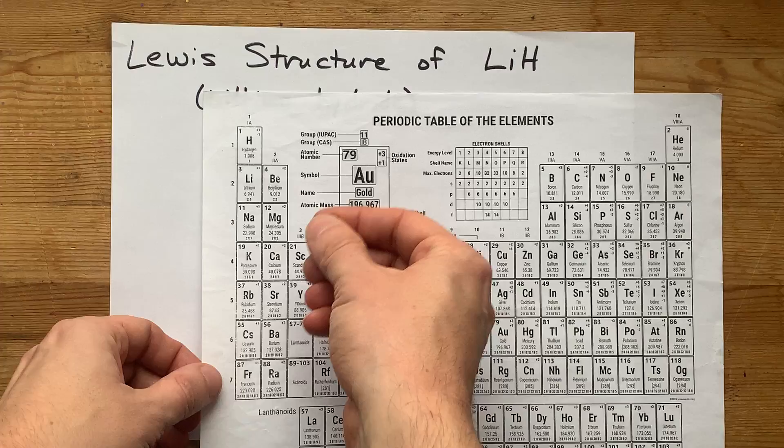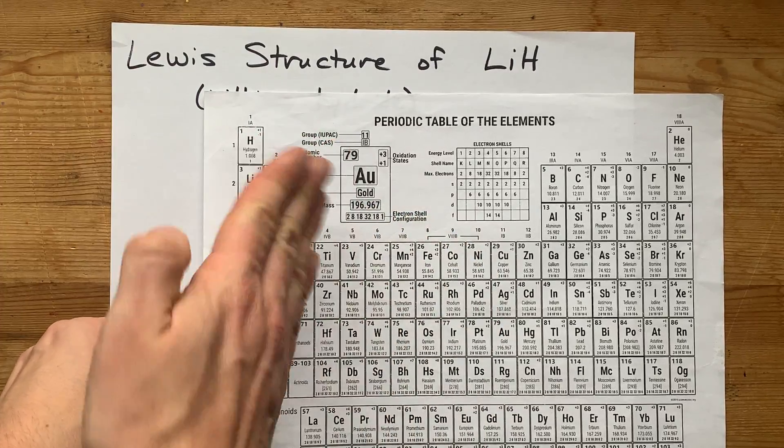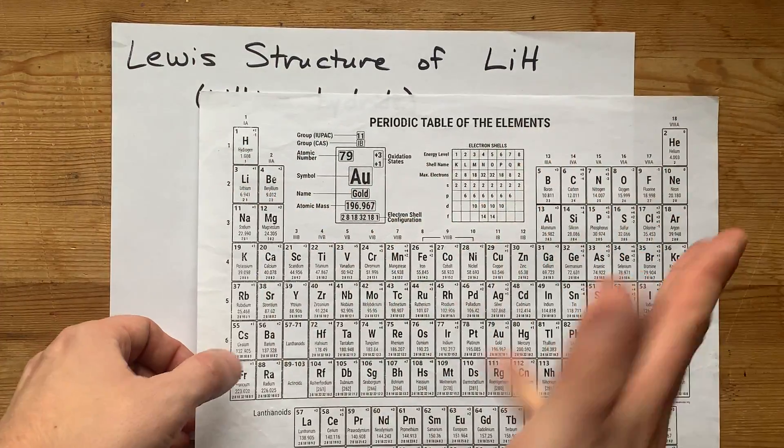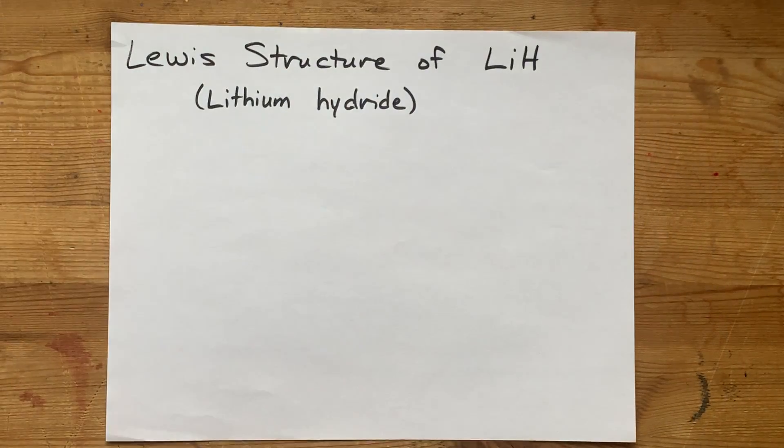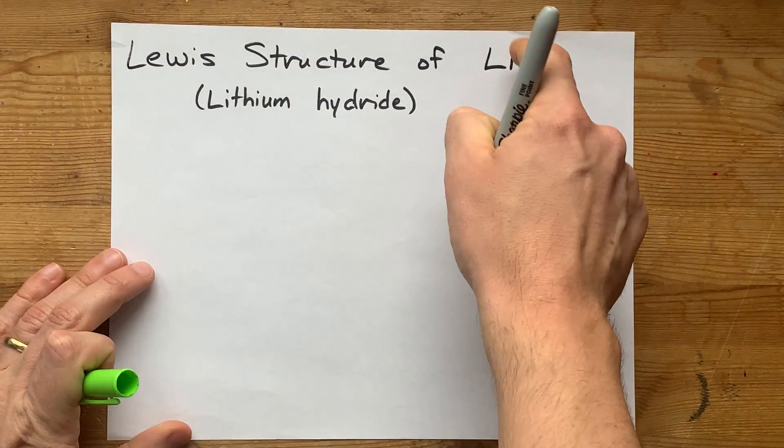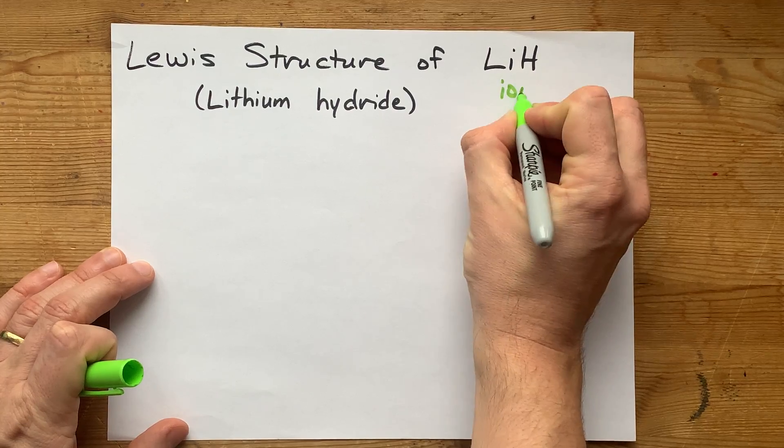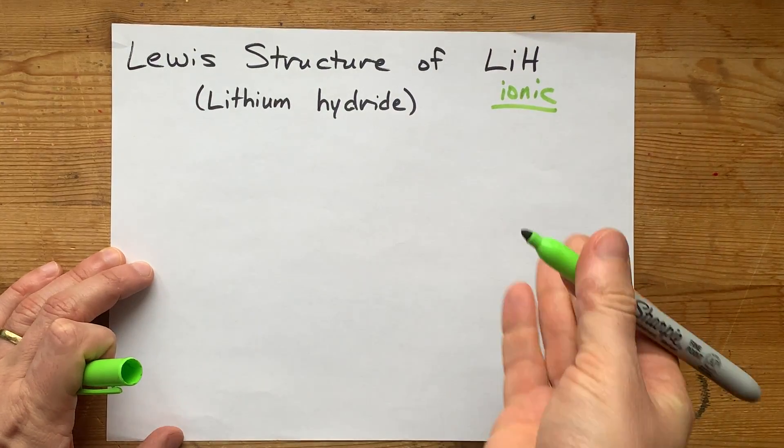Hydrogen is a non-metal. Even though it's over here on the metal side, that's just for the organization of the table. Hydrogen is always a non-metal. And therefore, a metal plus a non-metal means that this is an ionic compound.